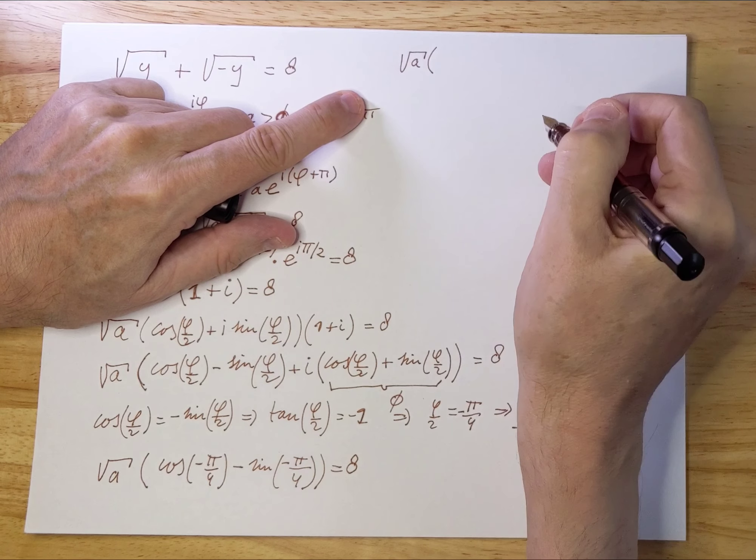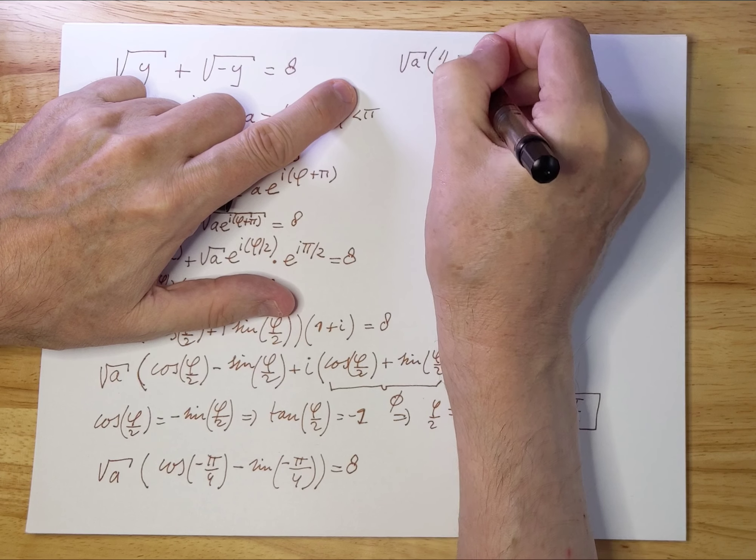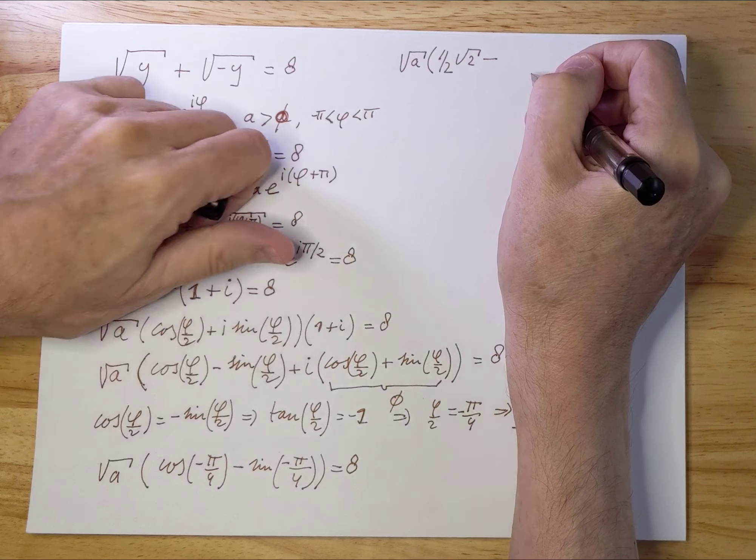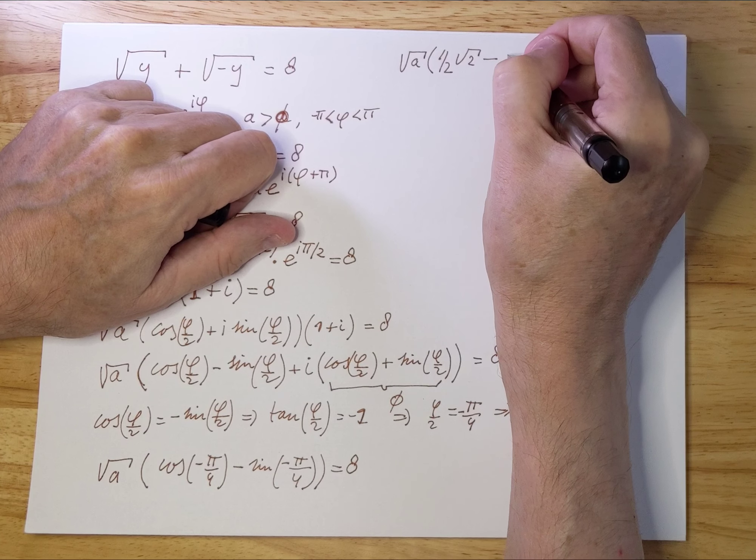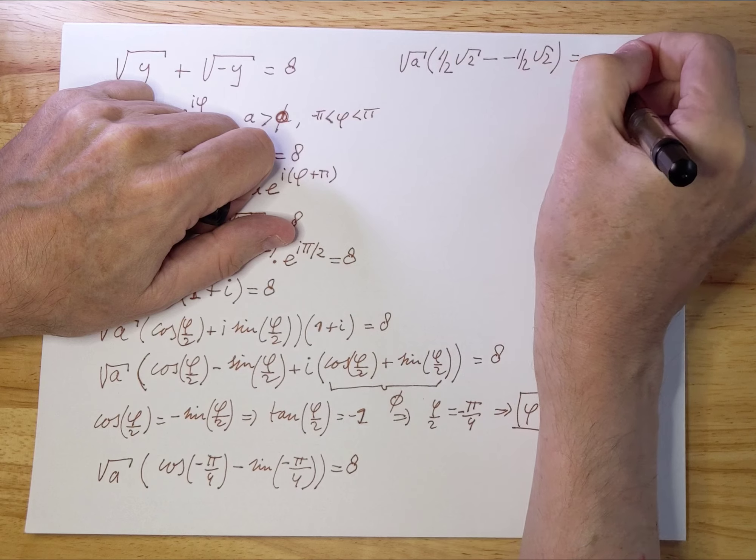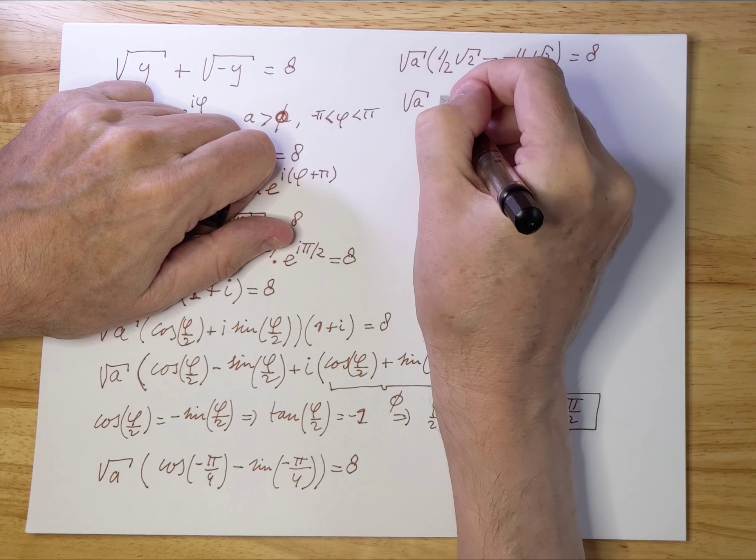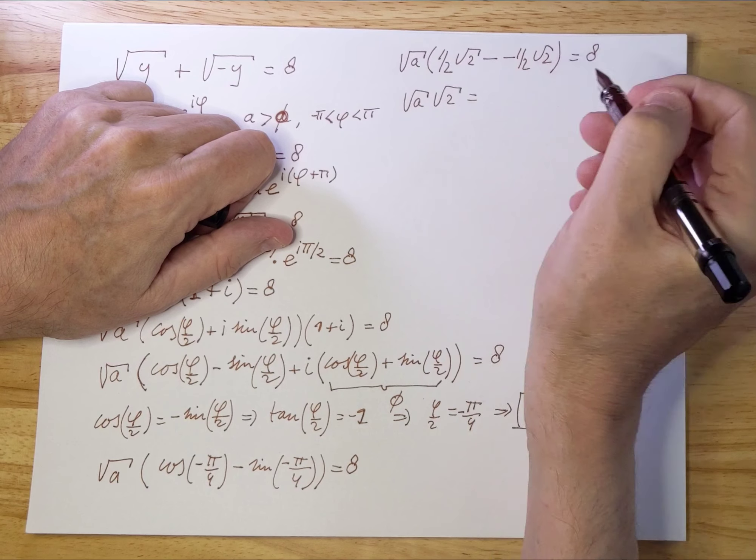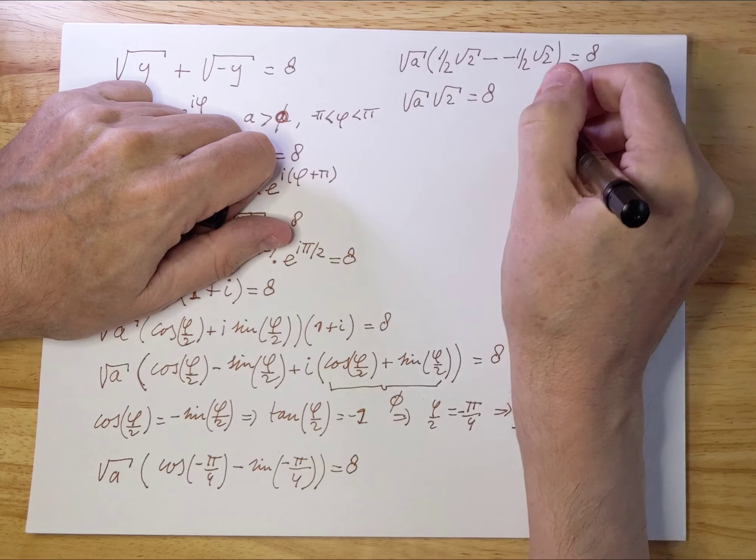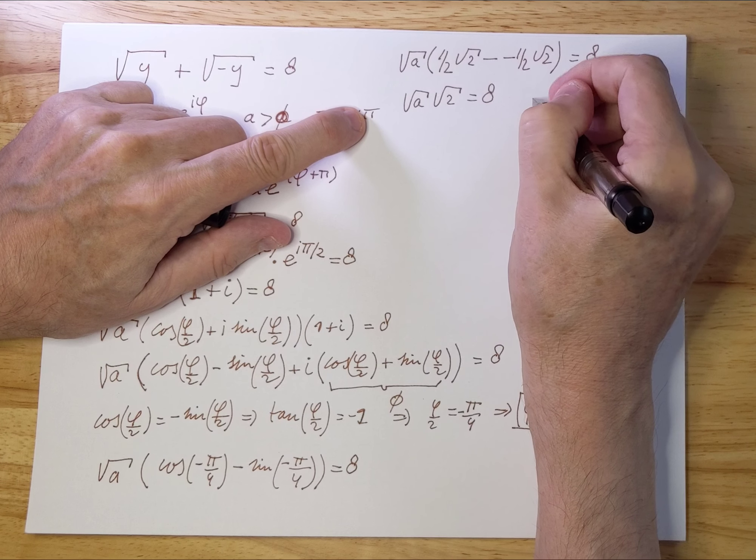This is √a times (√2/2 - (-√2/2)) = 8. So √a times 2 times √2/2 = √a·√2 = 8.